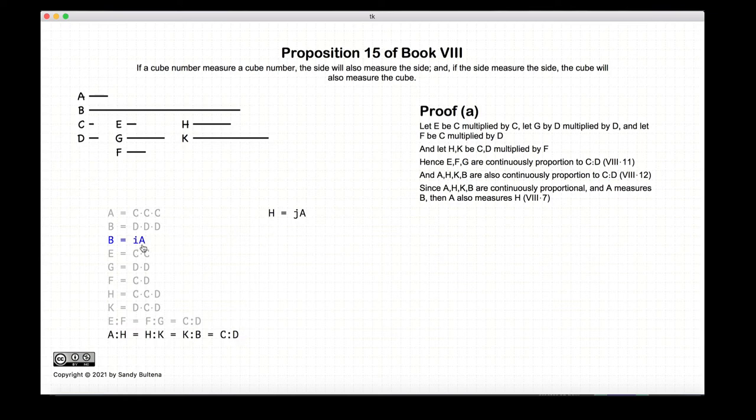Now we have established that a measures b. And if you recall from Proposition 7 of this book, if you have a series of continuously proportional numbers, if the first measures the last, it also measures the second. So if a measures b, a also measures h according to Proposition 7 of this book.